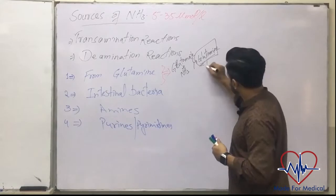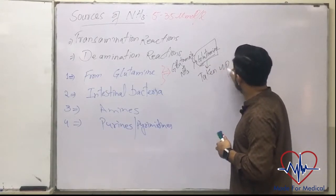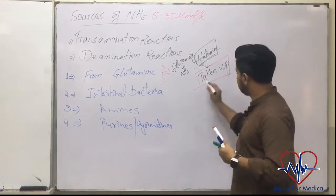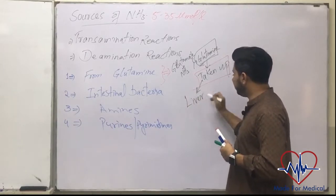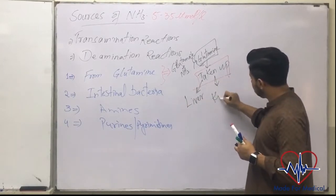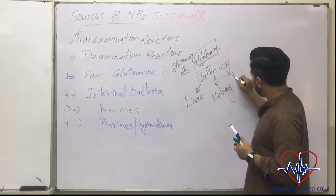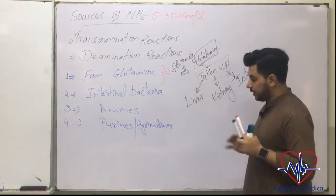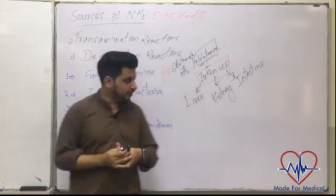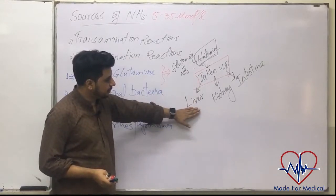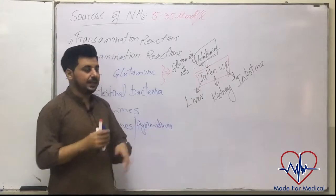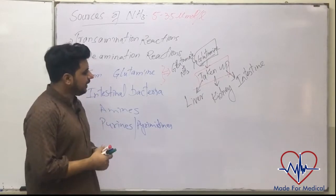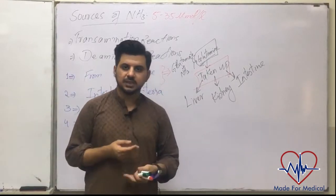This glutamine is taken up by three major organs: number one — the liver, number two — the kidney, and number three — the intestine. Now, what is the role of each organ when glutamine is taken up?